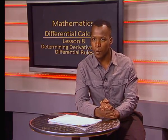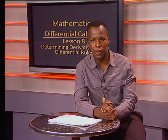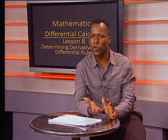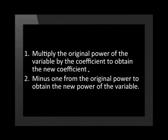Now let's look at some other examples together. Determine the derivative with respect to x of brackets 3x squared plus 8x minus 4. There are three terms within the brackets. Let's start by finding the derivative of each term. To make this easier, let's look at the two steps we need to follow. Why don't you take a moment to write this down. One, we multiply the original power of the variable by the coefficient to obtain the new coefficient. And two, we minus one from the original power to obtain the new power of the variable.